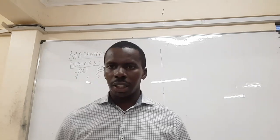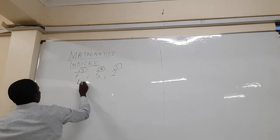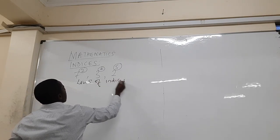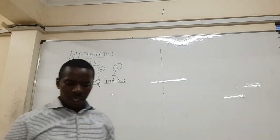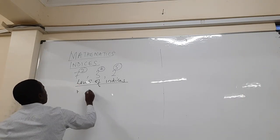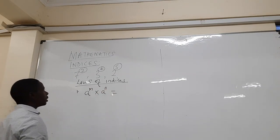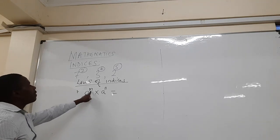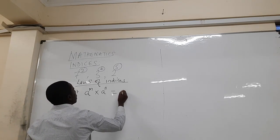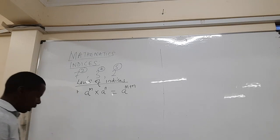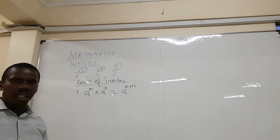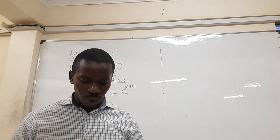Now let's look at the laws of indices. We have quite a number of laws and I will start with the first one, where we have a scenario like a to the power m times a to the power n. This is when you are multiplying two numbers with the same base — then we add the powers. So this becomes a to the power m plus n.